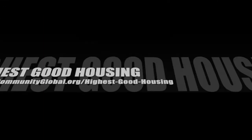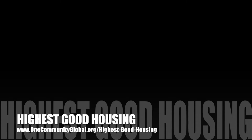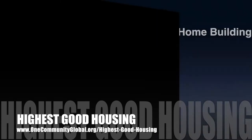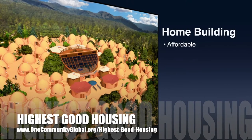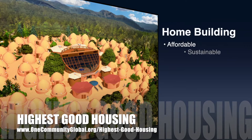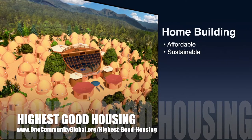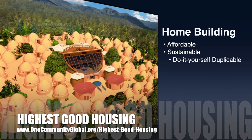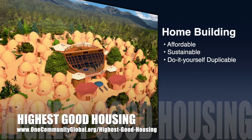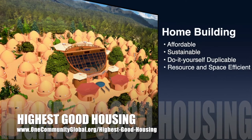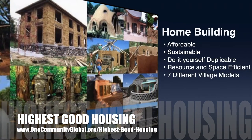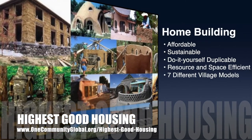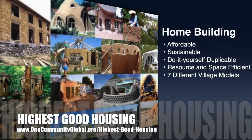The One Community approach to highest good housing is eco-artistic home building that is affordable, sustainable, do-it-yourself, duplicable, resource and space efficient, and consists of seven different sustainably constructed village models.